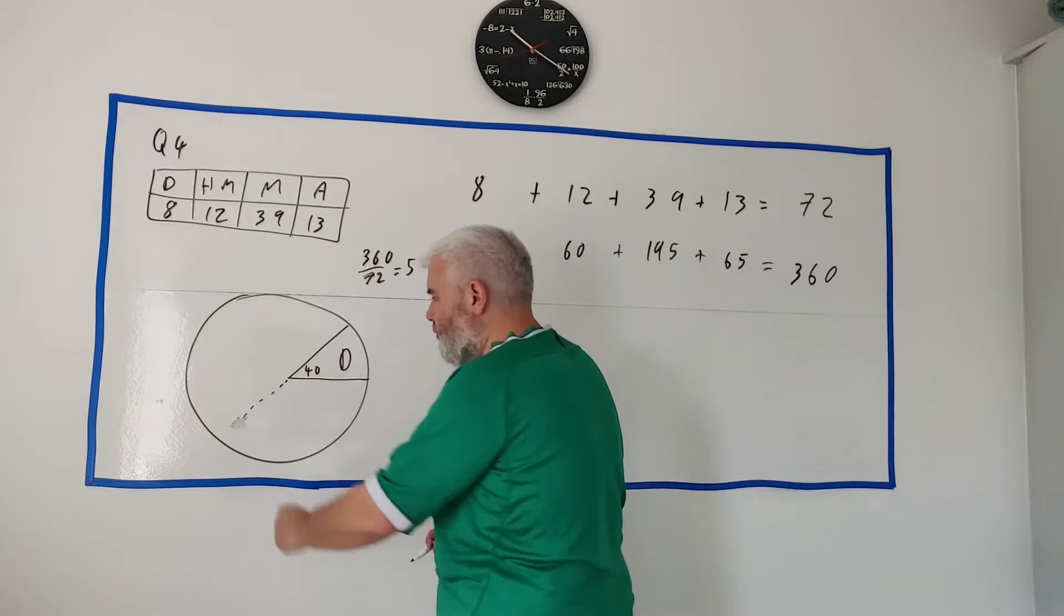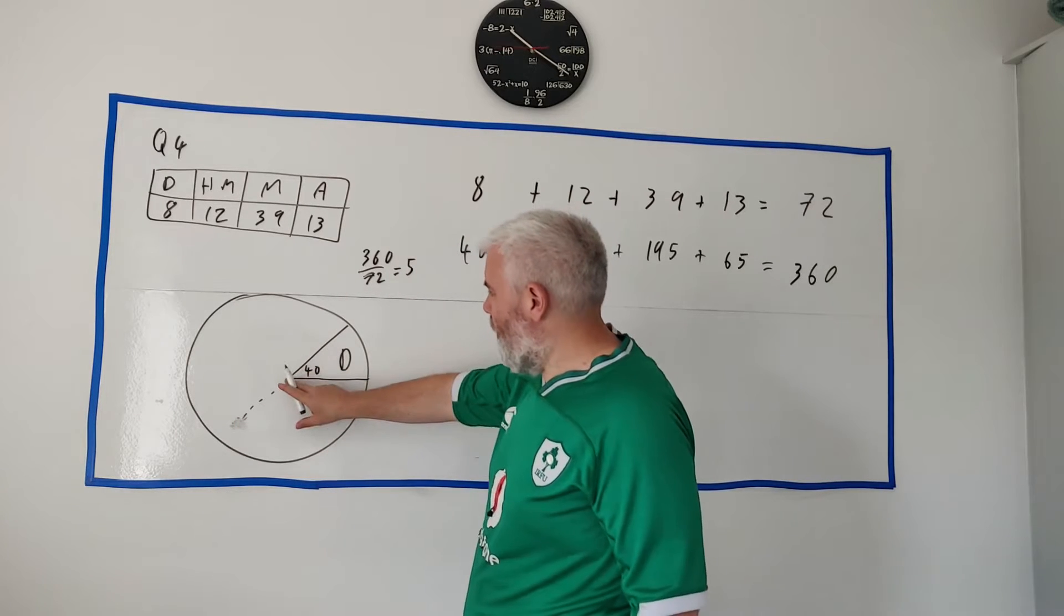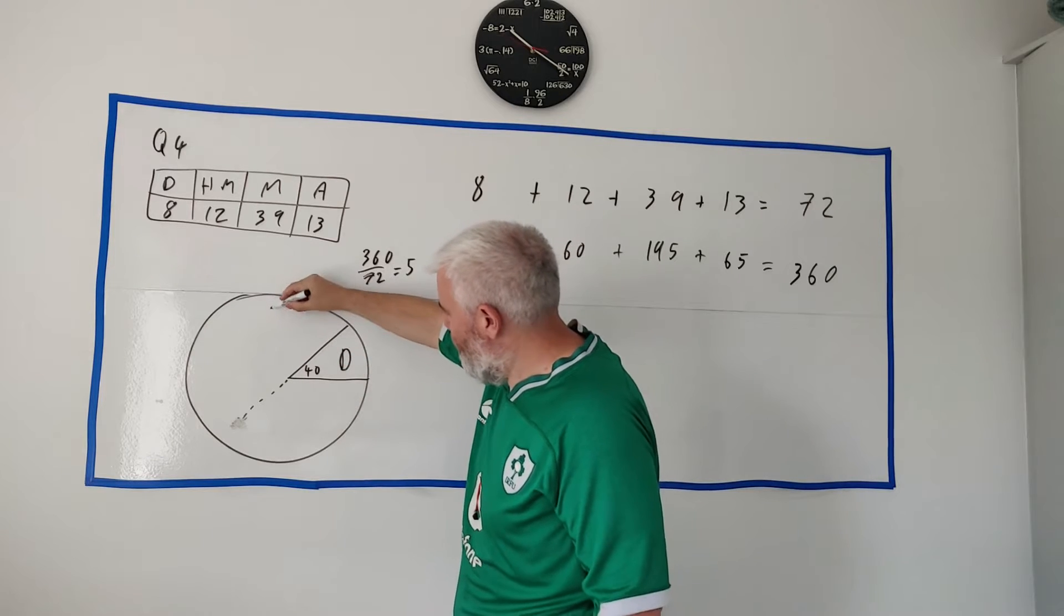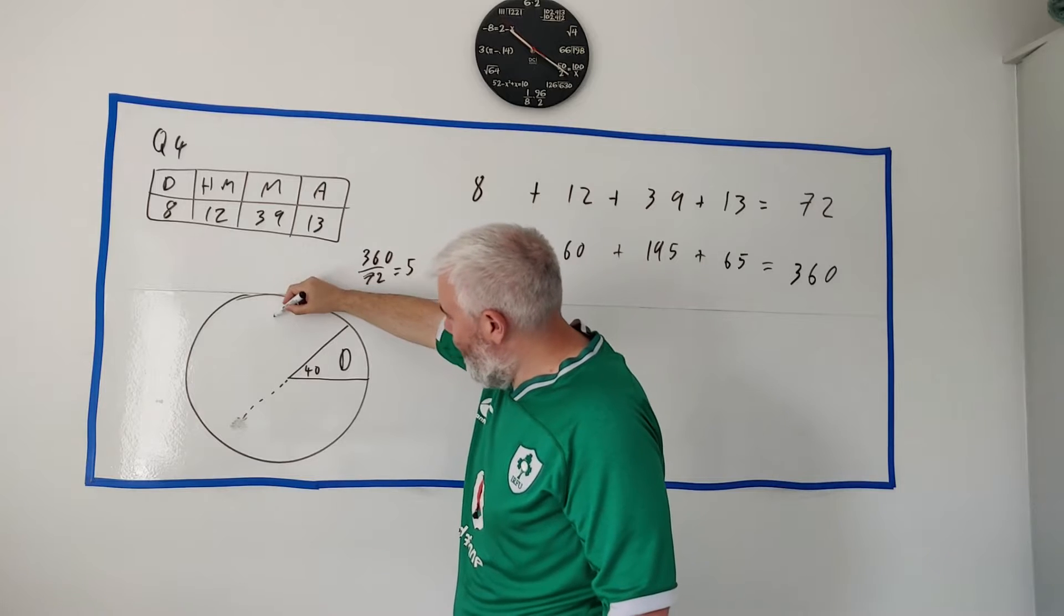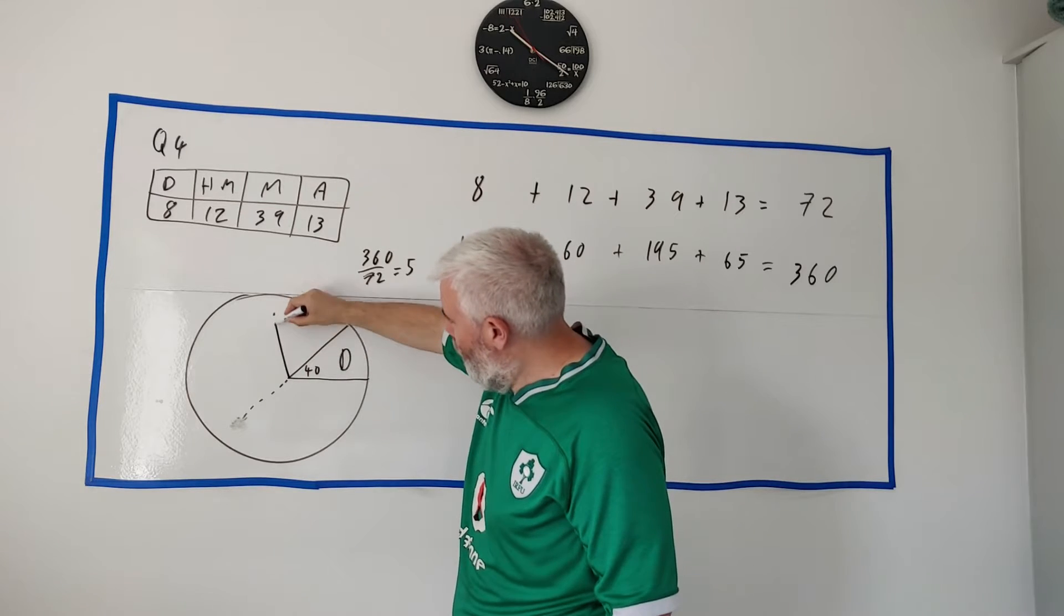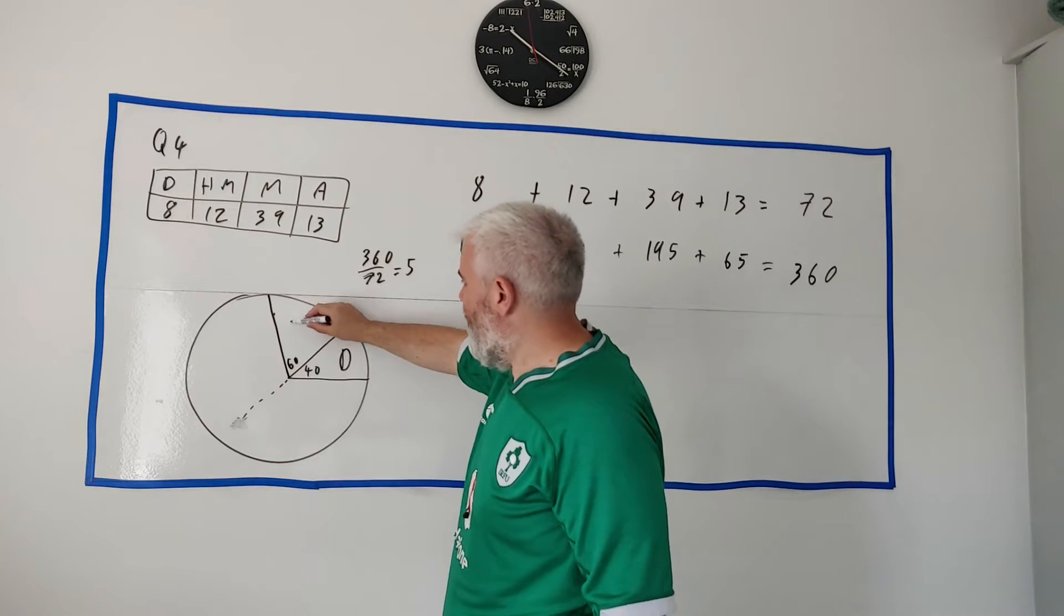Put your protractor on here and get 60 degrees, read 60 degrees off your protractor which would probably be something like over here, put a little dot, ruler, draw a line, that's your 60 now which was high merit.